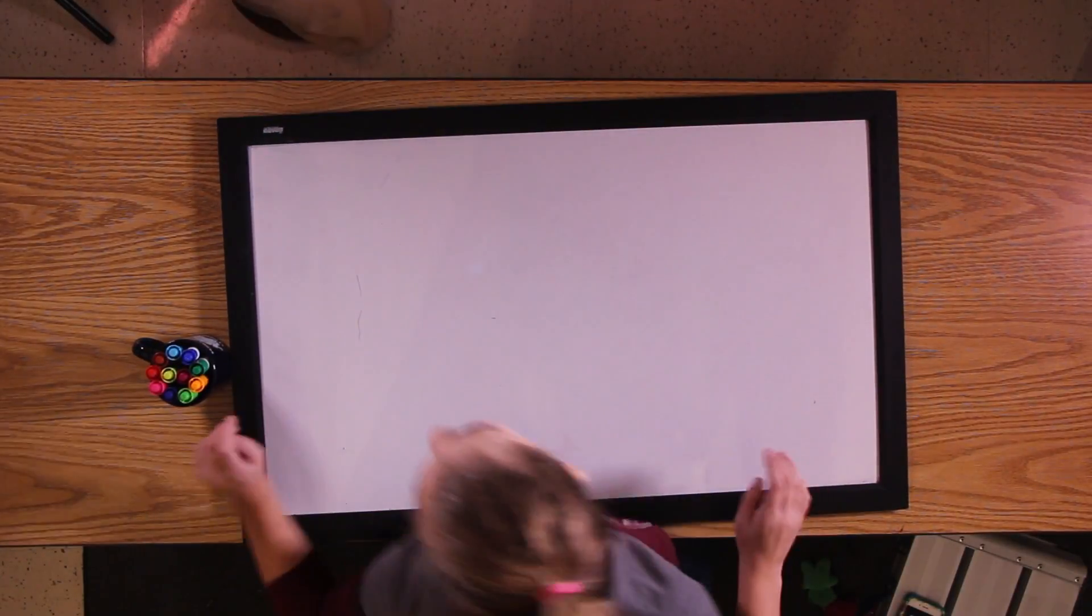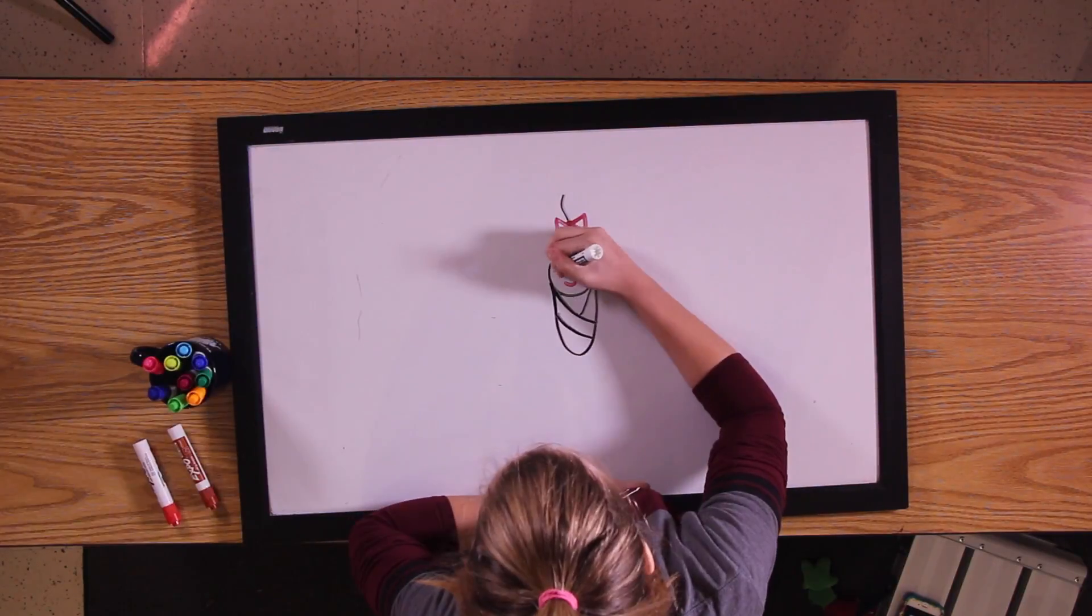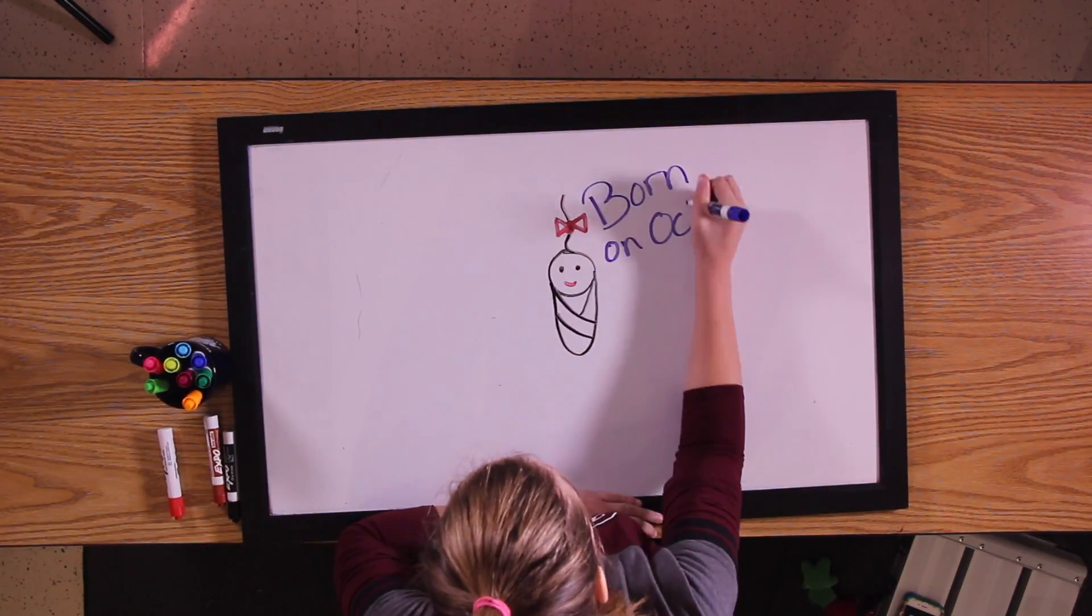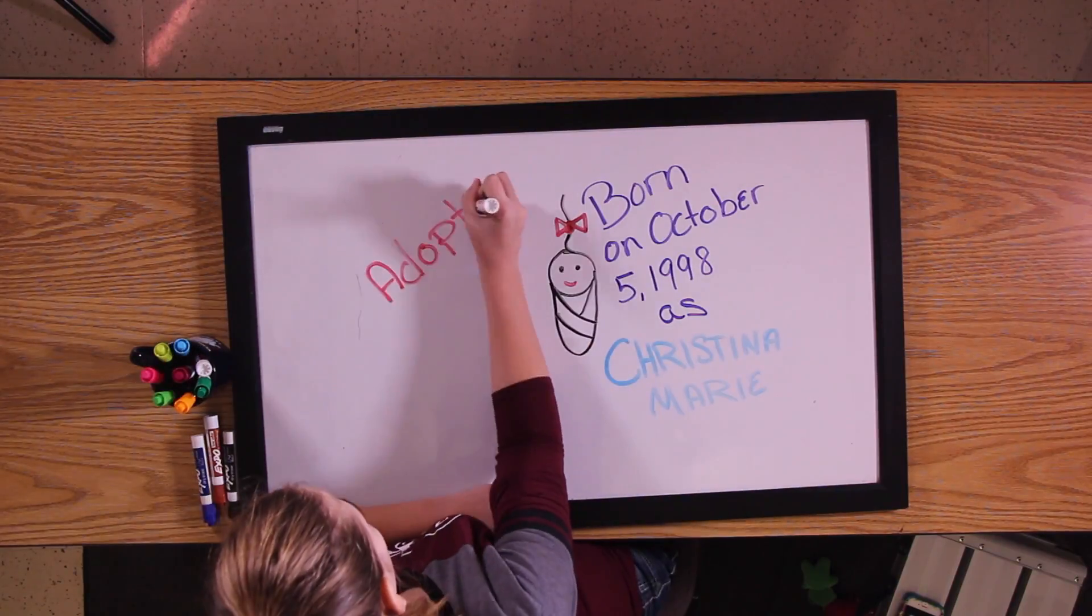Hello, I'm Sarah Graham and this is a drawing of my life. I was born on October 5th, 1998 to parents that I don't know. They named me Christina Marie.